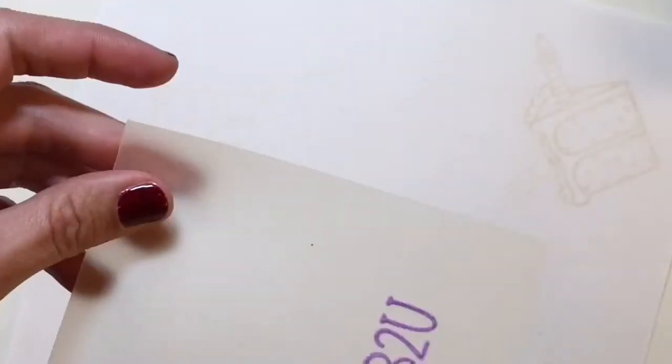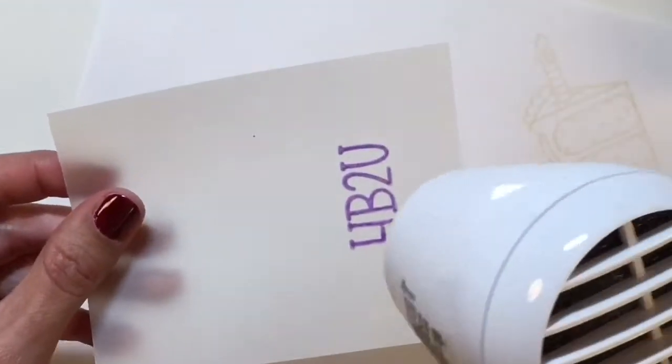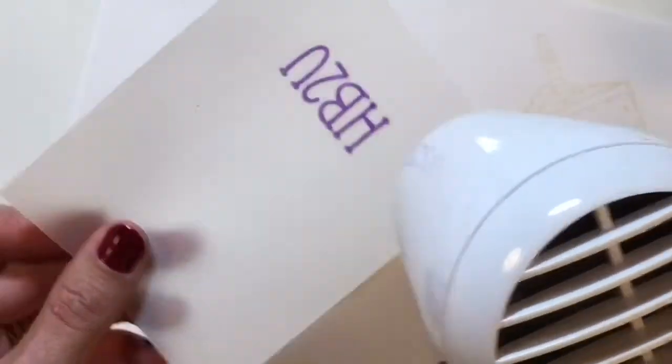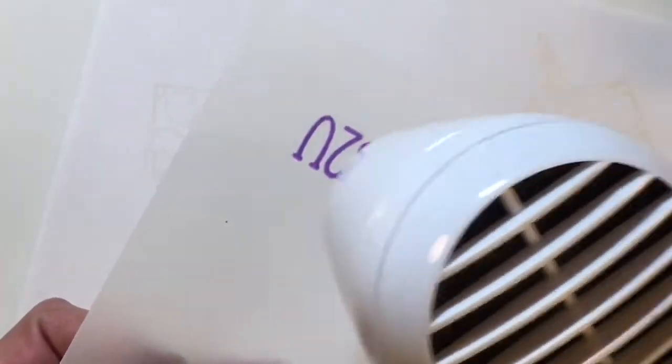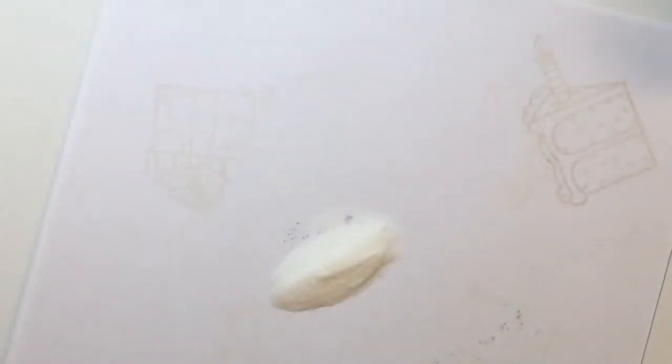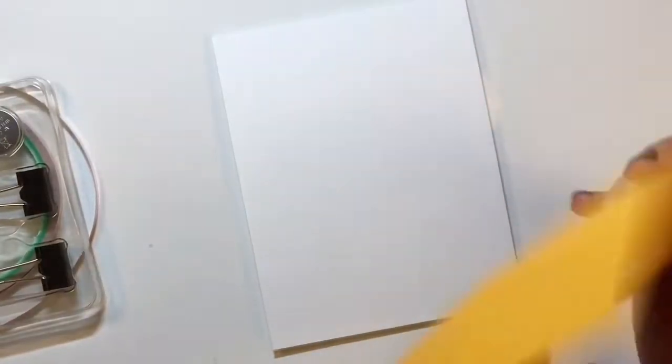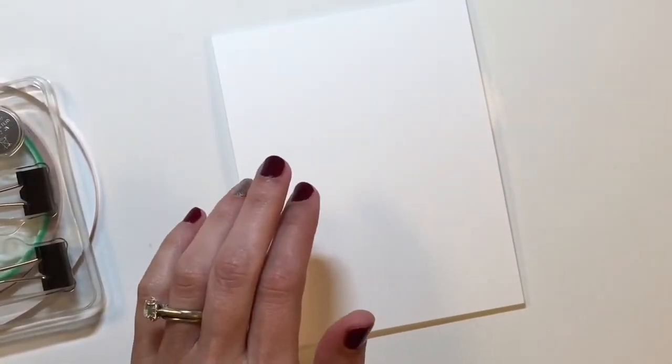The ink stays wet for a really long time. So I just took some clear embossing powder and sprinkled that over the top of the sentiment here. I'm going to heat that up and it gives you a nice little shiny raised effect to your sentiment, but it also dries your ink instantly so that you don't have to have a wait time for that.